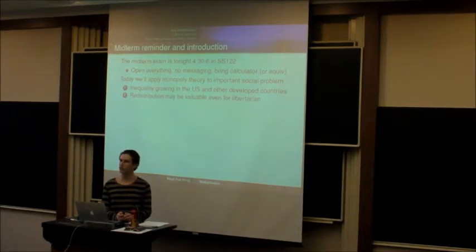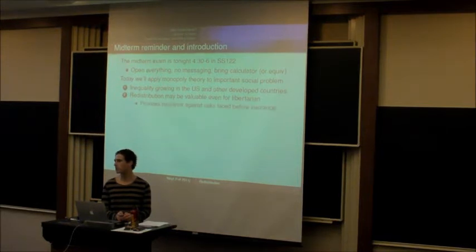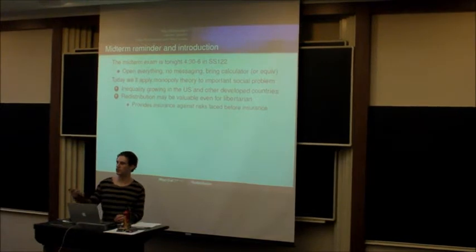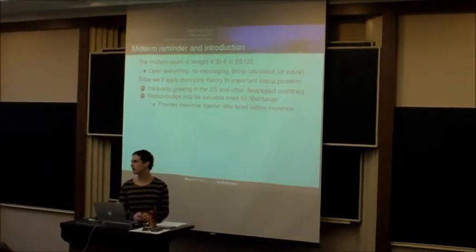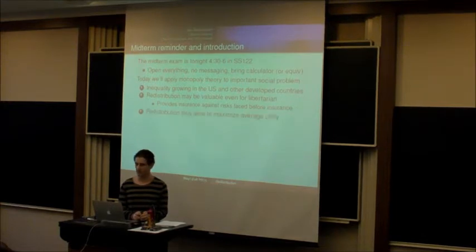I'll talk about why even if you're a libertarian who's naturally skeptical of government intervention, you may be sympathetic to redistributing wealth because it provides effectively insurance against risks that you would have faced before you knew who you are right now. So if you keep rolling back time and think about the decisions you would have made about insurance, that might lead you to want to redistribute wealth.